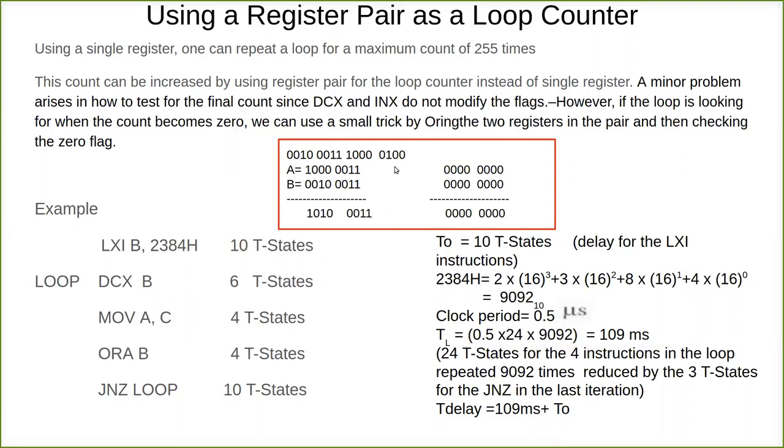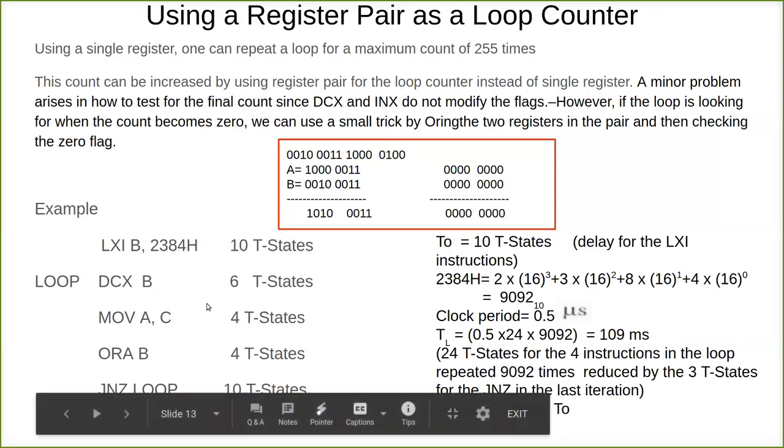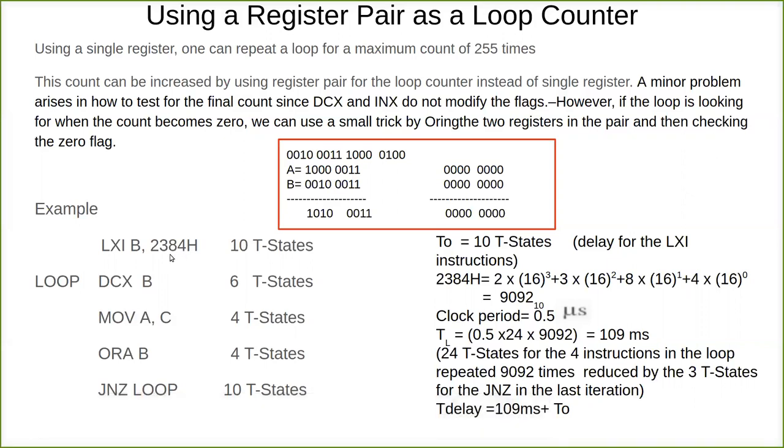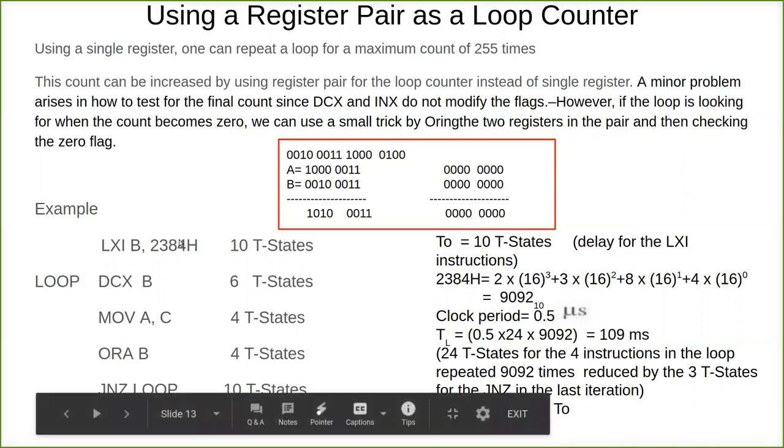It becomes 3. 4 becomes 3 and the next time 3 becomes 2 and so on. So 84 becomes 83, then 82 and so on till all these become 0.